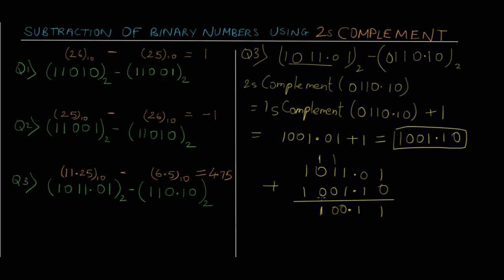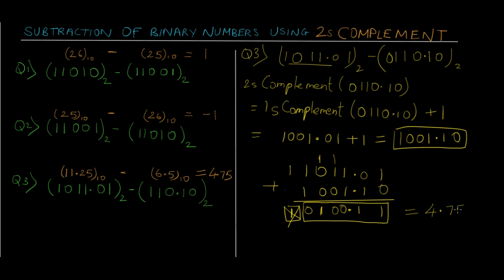Taking the addition: 1 plus 1 is 0 with a carry; 1 plus 1 is 0 with a carry; 0 plus 1 is 1; and 1 plus 1 is 0 with 1 extra carry. We got 1 extra carry, so the subtraction result is positive — we just discard this carry and the rest is the final answer: 100.11. Converting 100.11 to decimal gives us 4.75, which confirms our result.